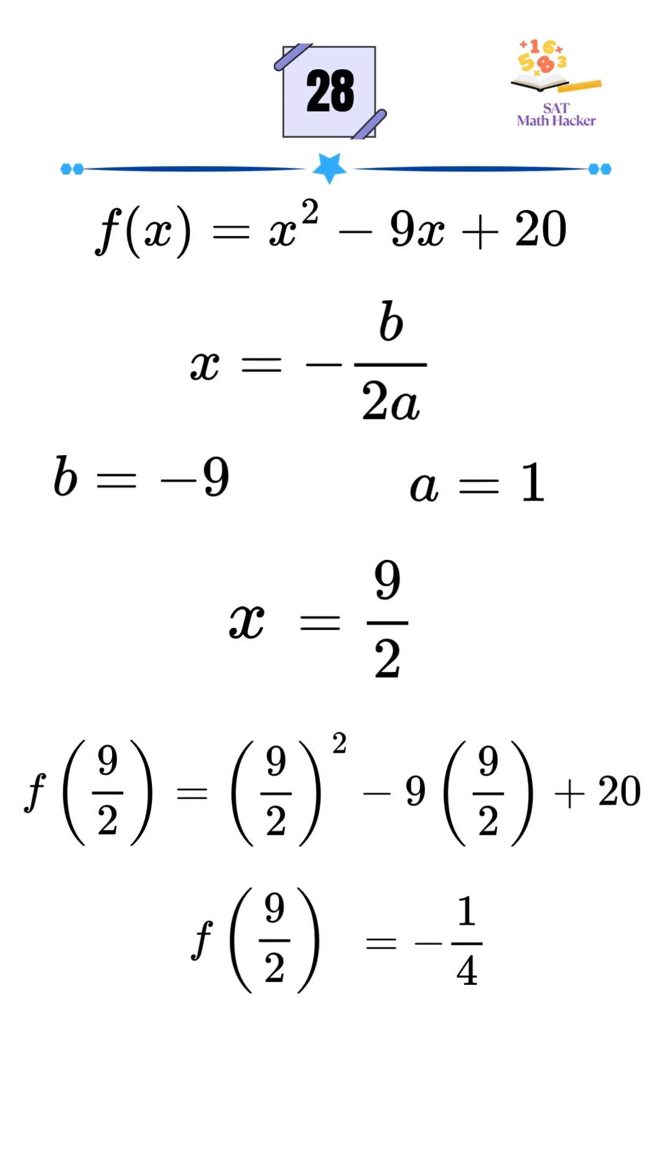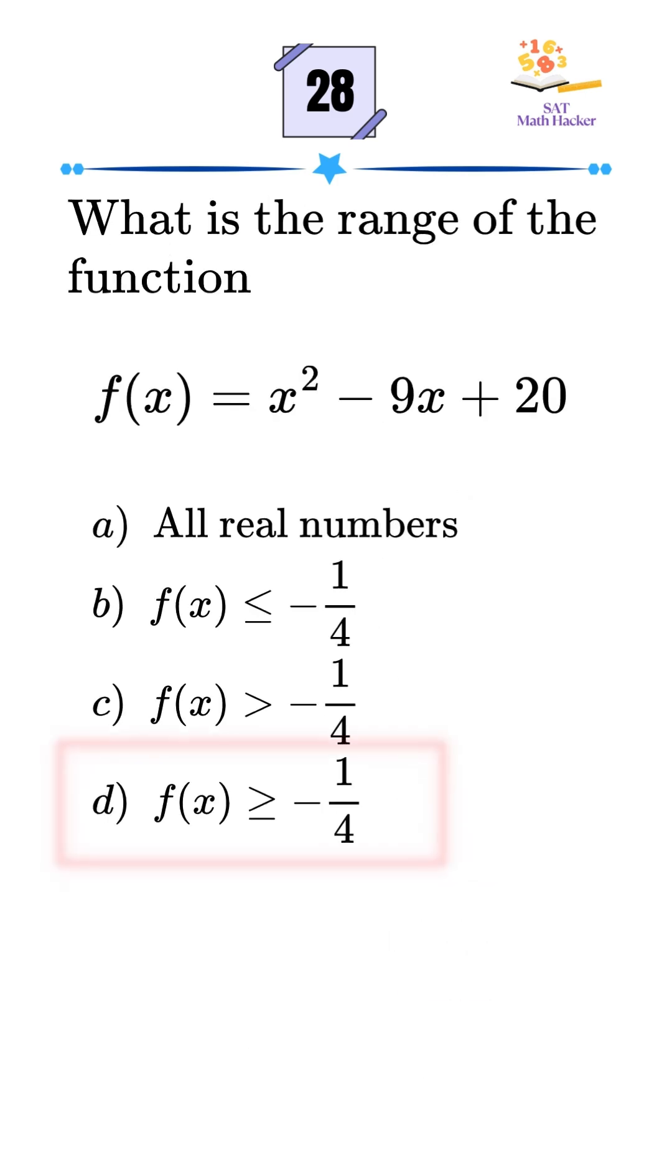So, the lowest point on the graph is negative 1 fourth, and the maximum is unbounded. That means the range is f of x is greater than or equal to negative 1 fourth. That matches option D.